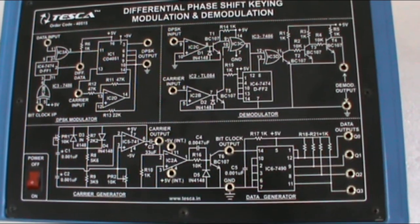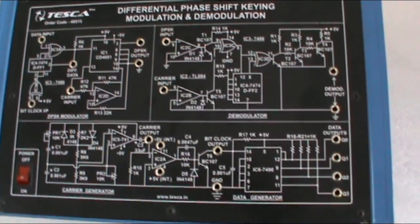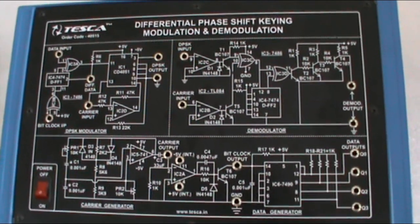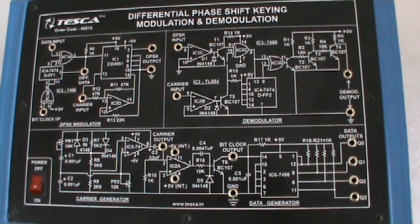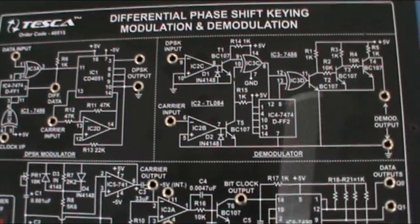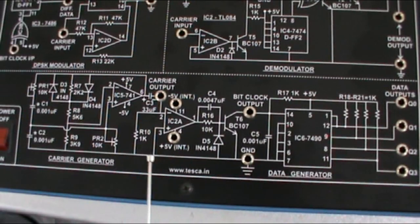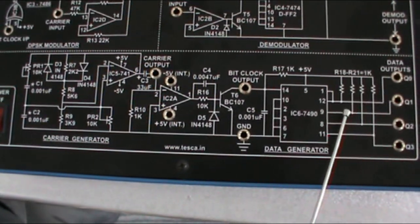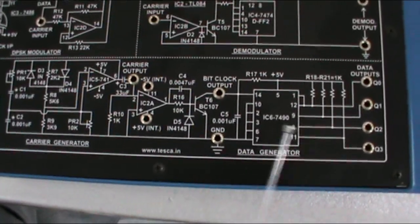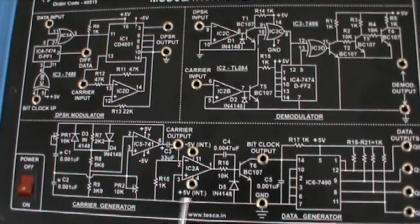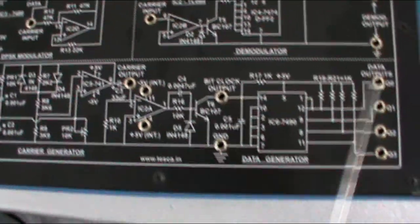This is a differential phase shift keying modulation and demodulation trainer. The order code of this trainer is 40515. On the panel you can see different blocks are given. The lower block is the carrier generator section. The circuit diagram of this section is shown on the panel, so you can study the circuit diagram of the carrier signal generator with the help of this block.